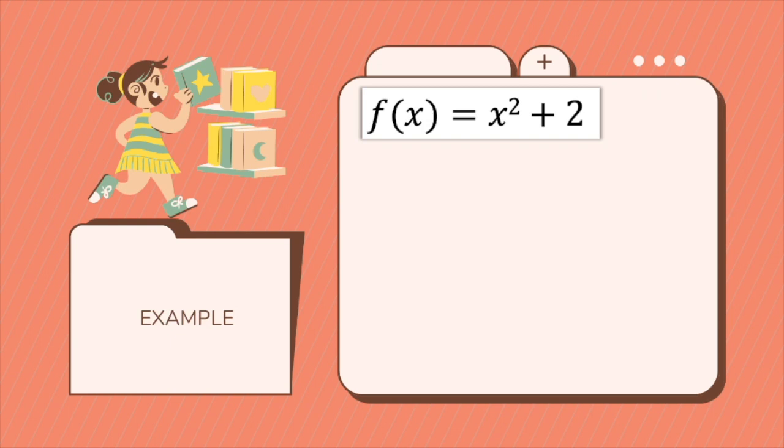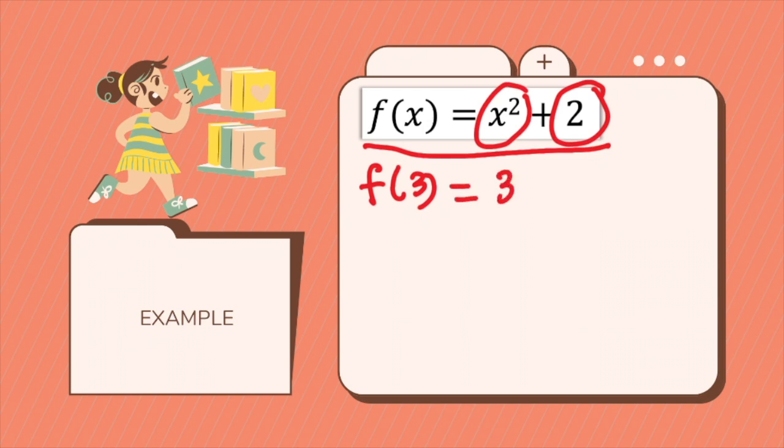Now let's check our understanding about function. So you have here the given function. What this function does is that it squares the input and then you add 2 to it. So what if you have a function where your input is 3? You have to substitute x with 3. You square 3 and then you add 2. So squaring 3 is 9. When you add 2, that is 11.